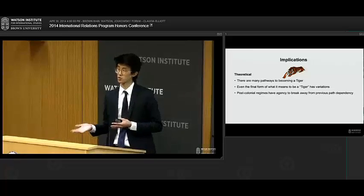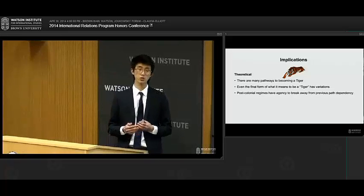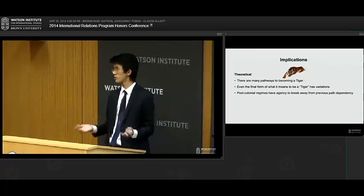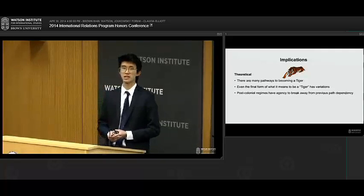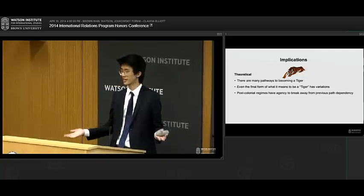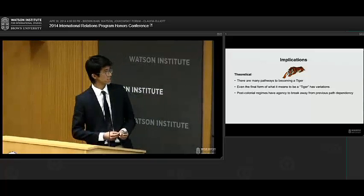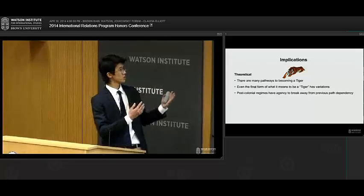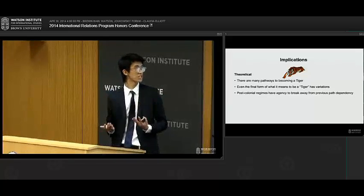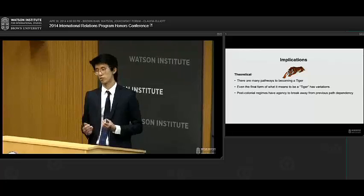And the converse was also true. If colonial Japan left Taiwan or Korea with something that was very beneficial, as with the case of a strong bureaucracy, it's possible obviously to botch that up, as Korea did under Syngman Rhee. And so post-colonial regimes have tremendous agency to break away and forge their own path.